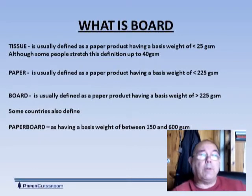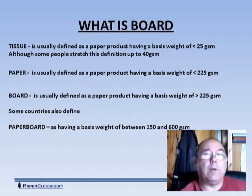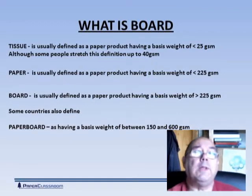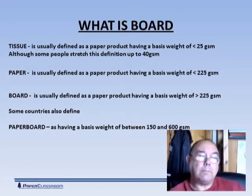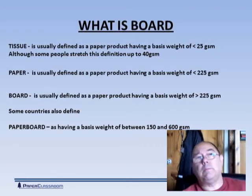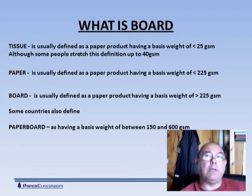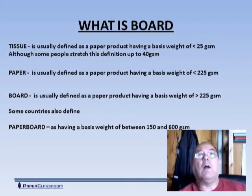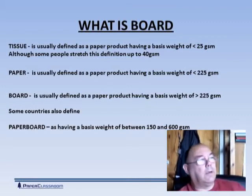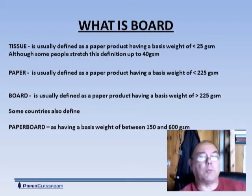Let's start with what is board. In the paper industry we've got tissue, paper, and board. Tissue is a lightweight material, normally defined as being less than 25 grams per square meter, although some people extend this to up to about 40 grams per square meter.